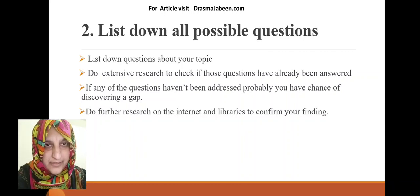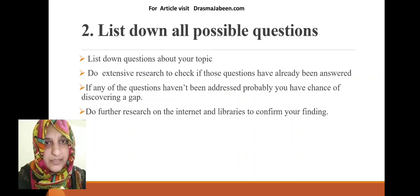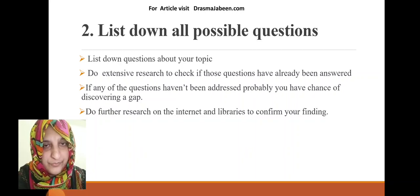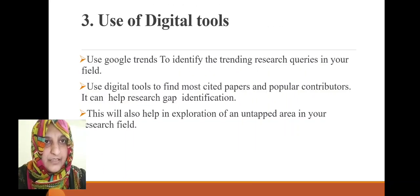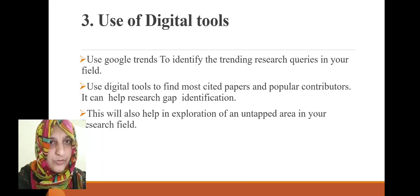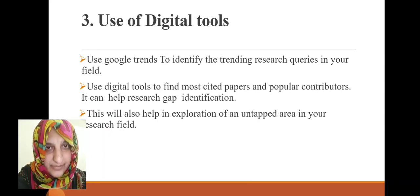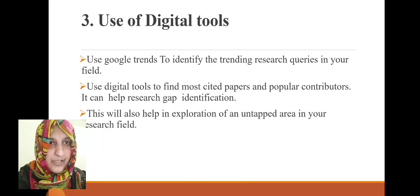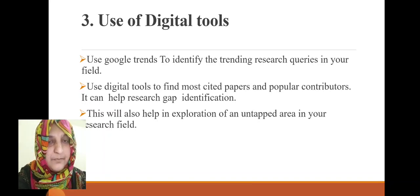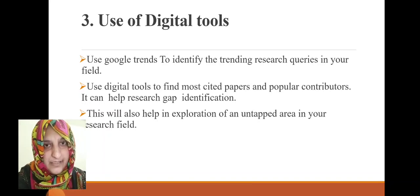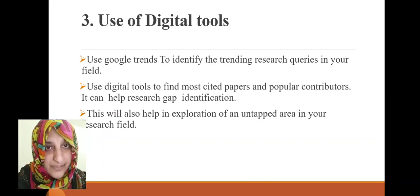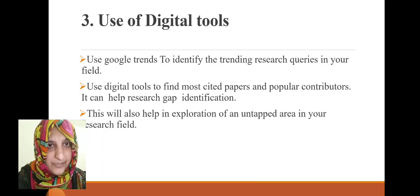After this step, you will be required to do further research on the internet, in digital libraries, or in physical libraries to confirm your finding — whether you have found a research gap or not. The third way is the use of digital tools. You can use Google Trends to identify different trending research queries in your field, and using digital tools you can find the most cited research papers and popular contributors in your field to identify the research gap.